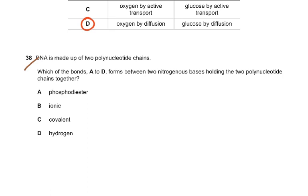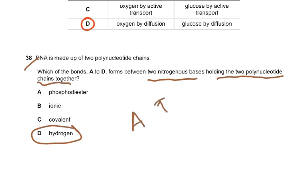Question number 38: DNA is made up of two polynucleotide chains. Which of the bonds A to D forms between two nitrogen bases, holding the two polynucleotide chains together? The answer is hydrogen bonds — adenine and thymine form 2 hydrogen bonds, cytosine and guanine form 3 hydrogen bonds. Hydrogen bonds hold the nitrogen bases together.